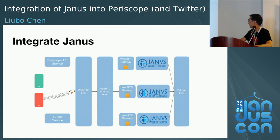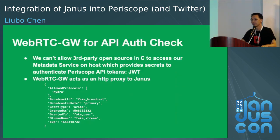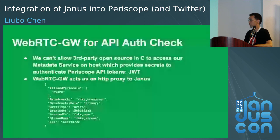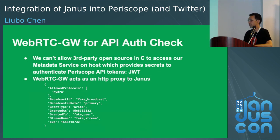Why do we need the WebRTC gateway? Janus is a third-party open source project and is not allowed to access our metadata service on the same host. So we put a WebRTC gateway in front of each Janus instance to handle API authentication checks. The WebRTC gateway acts as an HTTP proxy to Janus — it checks all HTTP requests, and if valid, forwards them to Janus. We use JSON tokens for authentication: you can check if the protocol is allowed, if the token is granted to the user, and if the broadcast role permits the action — for example, guests are not allowed to create a video room.